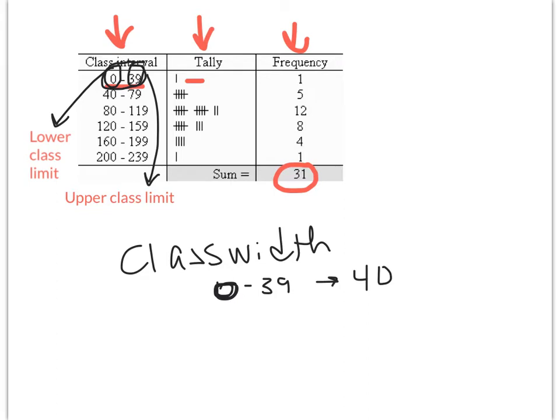Let's say that this distribution table is about sit-ups. And if you do 0 sit-ups, you would fall into this range. If you did 39 sit-ups, you would fall into this range. So there's 40 possible numbers of sit-ups that you could do that you'd fall into this range.